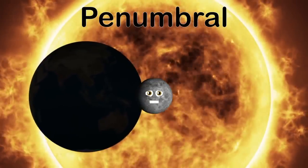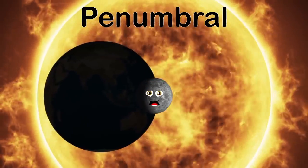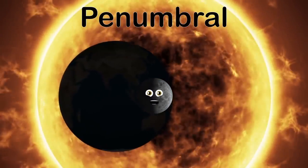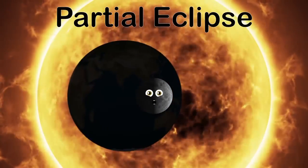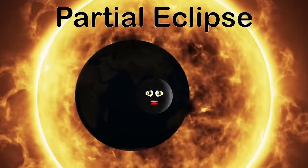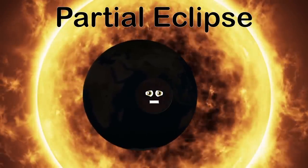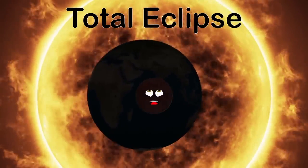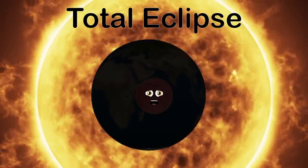Stage one is the penumbra eclipse — it's when I enter the penumbra and a partial shadow is cast on my surface. Stage two is a partial eclipse, when the earth moves between the sun and the moon, casting more of a shadow upon me.